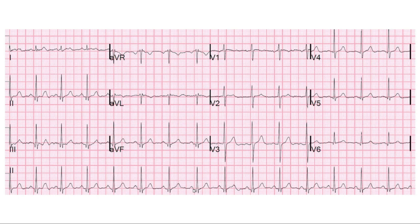The next thing we look for in the ECG is the rate. We can find the rate by counting the large boxes between a QRS complex that lies on a bold line. The first box after this line is counted as 300, the next large box as 150, the third as 100, the fourth as 75, then 60, 50, and 40. So in this case the rate will be between 100 and 75, that is approximately 80 to 85.